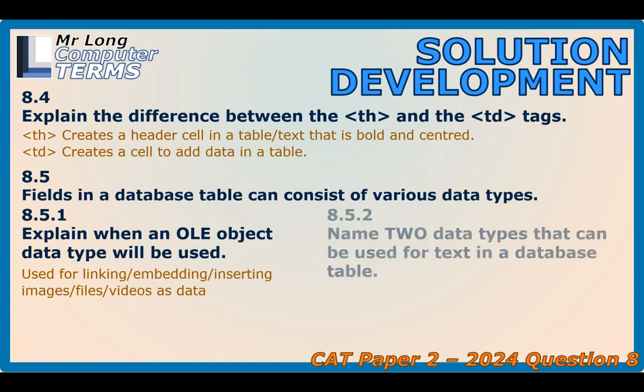What about data types that can be used for text? Name two. The most common ones are short text and long text. Short text is for content 255 characters or shorter. Long text is for paragraph-based or large amounts of text. Technically, you could also use the lookup data type — a lookup gives you a list of options, and those options can be text, for example marketing, sales, or management. That is technically a correct answer.